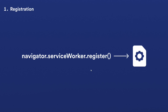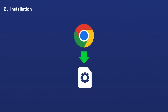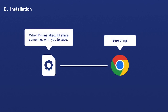After the service worker is registered, the browser will download the script and execute it in a separate thread. This is known as the installation phase. In this phase the service worker script is checked for validity and is cached by the browser. If the installation is successful, the install event is fired, allowing the service worker to perform any necessary setup tasks. We'll be creating an event listener around this install event and caching our files inside it.